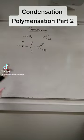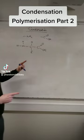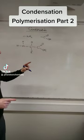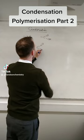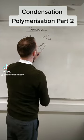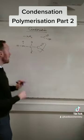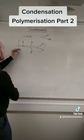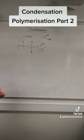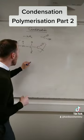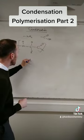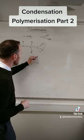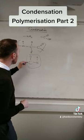So what happens? Well, if I have a look at this, the small molecule that comes off is water. The OH comes off from here, so that would be one end of my monomer. And the hydrogen comes off here, so that's the other end of my monomer. So the amide linkage — the peptide link — looks like this. That's what you're looking for.